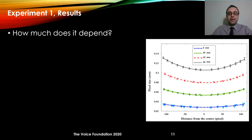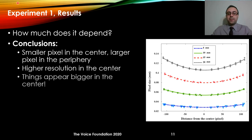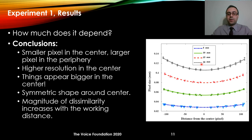To quantify this effect, we plotted distance of a pixel from the center on the x-axis against pixel size on the y-axis. The center has the minimum pixel size, meaning it has maximum spatial resolution. Consequently, if an object is in the center it will appear larger in the image compared to when the same object moves to the periphery. The curves are symmetric around zero, and the magnitude of the curvature — or dissimilarity between periphery and center — increases as working distance increases.